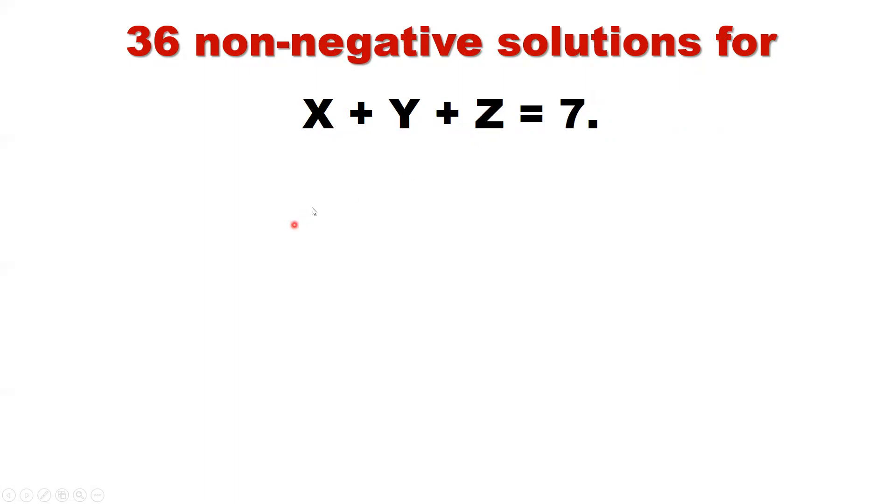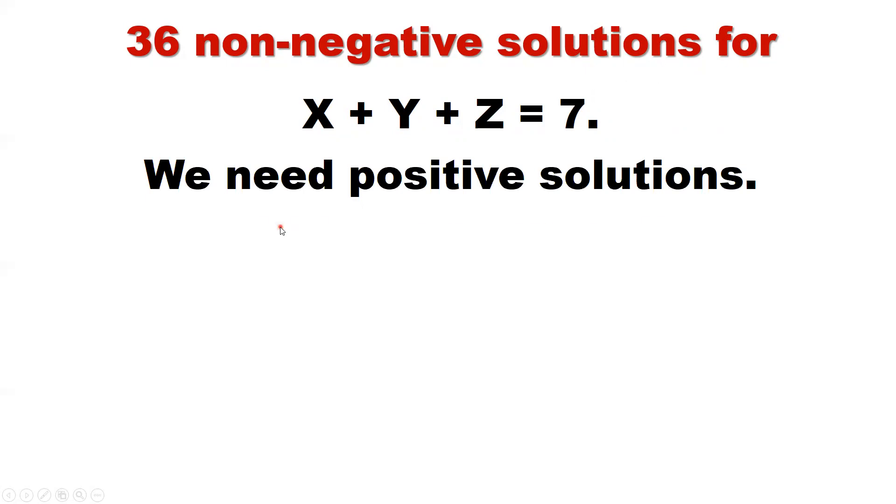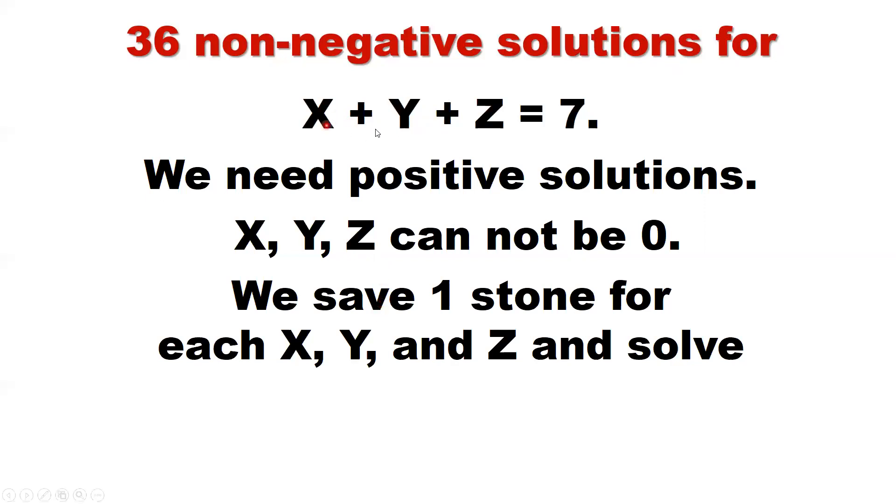But in the original problem, we need positive integer solution. X, Y, Z cannot be zero. So now how to do this? Practically, we can do this. Because X, Y, Z from previous example, they can be zero. How to avoid zeroes? We can do this. Save one stone for each X, Y, Z. That means give X one stone. Give Y one stone. Give Z one stone. So totally, we have seven stones. After we did this, how many stones left? We only have seven minus three left, four.